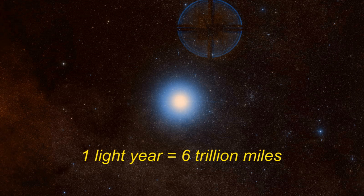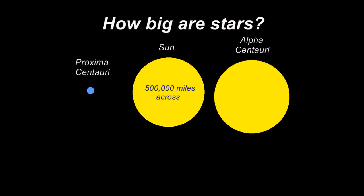So now we know that Alpha Centauri is four light years away. How big is it? It's about the radius of the Sun, and the Sun is a pretty average star at half a million miles across.